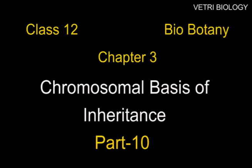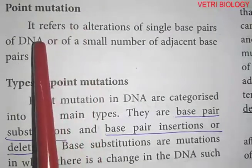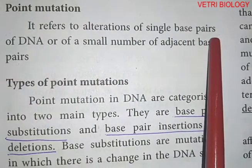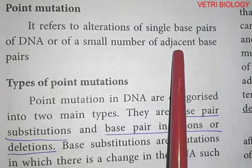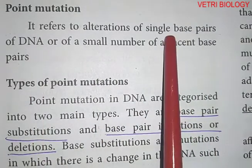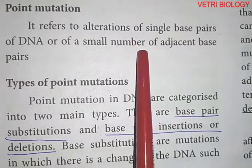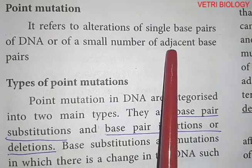Dear children, in the previous class we have seen mutation and its major types. Now let us learn about point mutation. It refers to alterations of single base pairs of DNA or of a small number of adjacent base pairs. One single base pair alteration is what constitutes a point mutation.